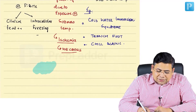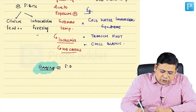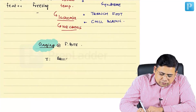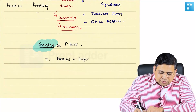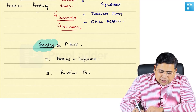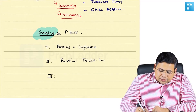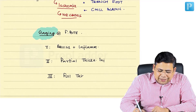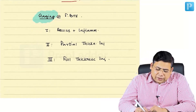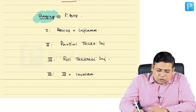What is the staging of frostbite? Stage one consists of bruise plus inflammation. Stage two is partial thickness involvement. Stage three is full thickness injury — this was asked in MCH entrance in the 2019-20 session. Stage four is stage three plus involvement of deeper structures.